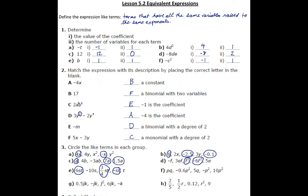Moving on to part F: we've got PQ, but there are no other terms that have both P and Q in it. We've got a negative 0.6P squared, and I can see there is another term that has P squared — negative P squared and also 10P squared. Those three are like terms. And 5Q is not a like term with any of the others — there are no other terms that have just Q.